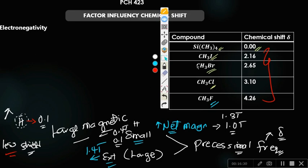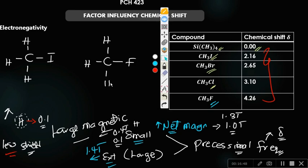Consider CH3I and CH3F. This is the chemical environment of those protons. We said what causes the magnetic field is the electrons around it. Anything that removes these electrons makes this magnetic field small, and the smaller the small magnetic field, the larger the net magnetic field. The increase in net magnetic field leads to increased precessional frequency. If precessional frequency increases, chemical shift increases. So what fluorine does is withdraw electrons from the compound, making it less shielded, or we say it deshields.